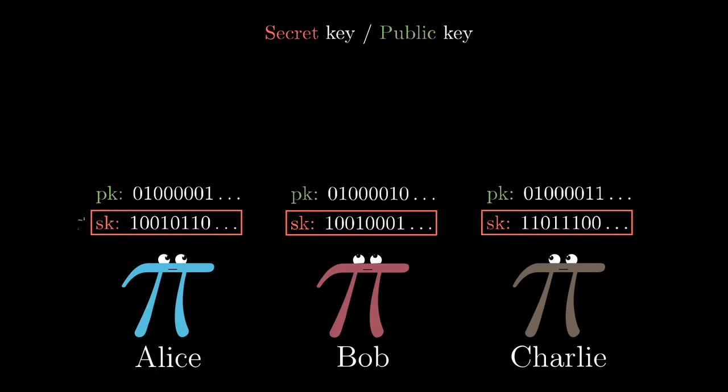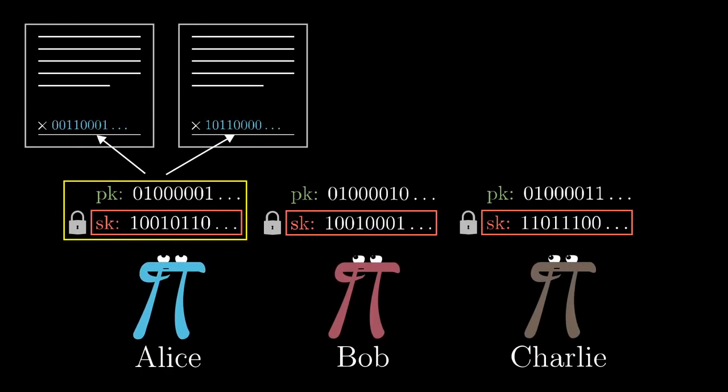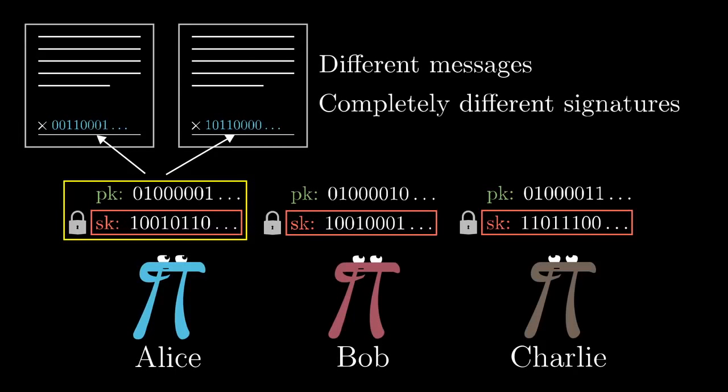Now as the name suggests this secret key it's something you want to keep to yourself. In the real world your handwritten signature looks the same no matter what document you're signing. But a digital signature is actually much stronger because it changes for different messages. It looks like some string of ones and zeros, commonly something like 256 bits, and altering the message even slightly completely changes what the signature on that message should look like.